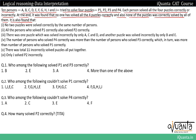The clues we have are: first, no two puzzles were solved correctly by the same number of persons; second, all persons who solved P1 correctly also solved P2 correctly. These clues are regarding the number of puzzles that people are solving correctly, and we'll go through all of them.